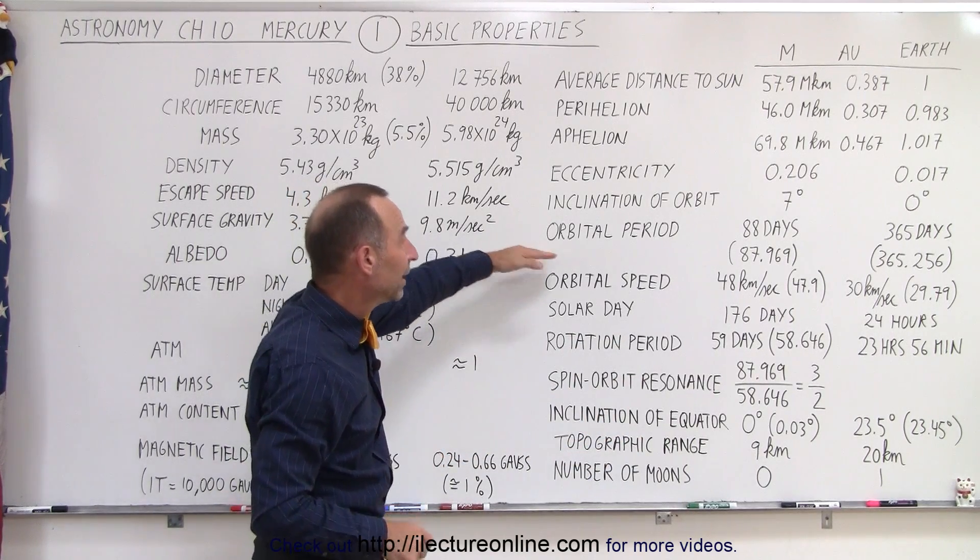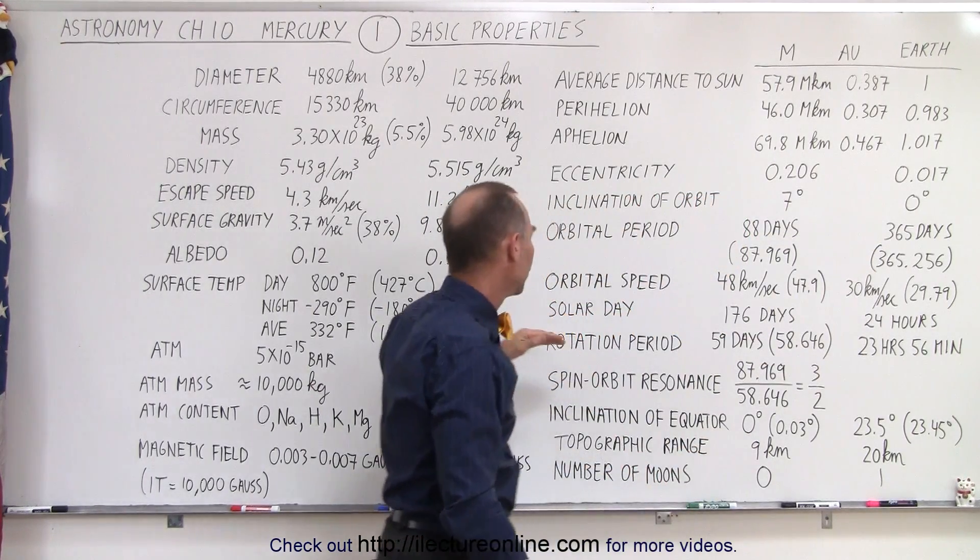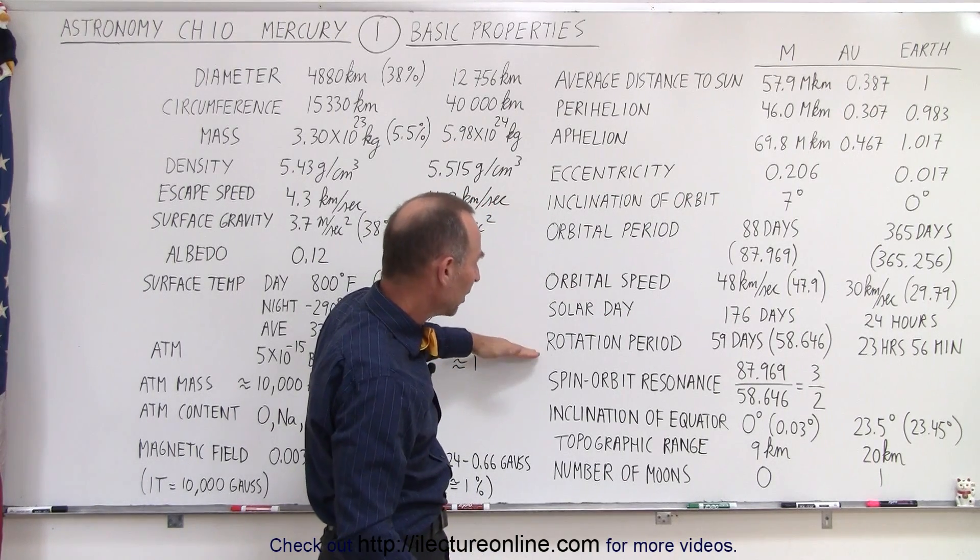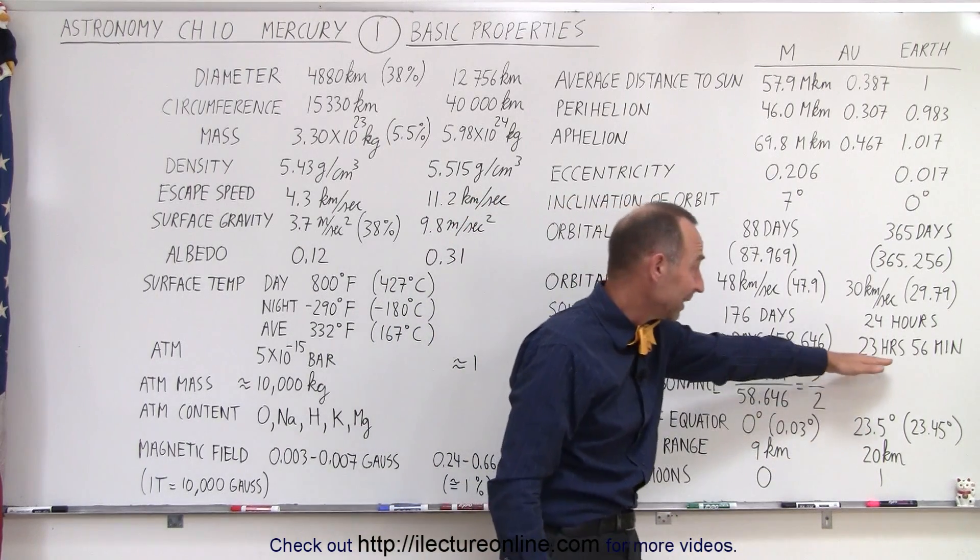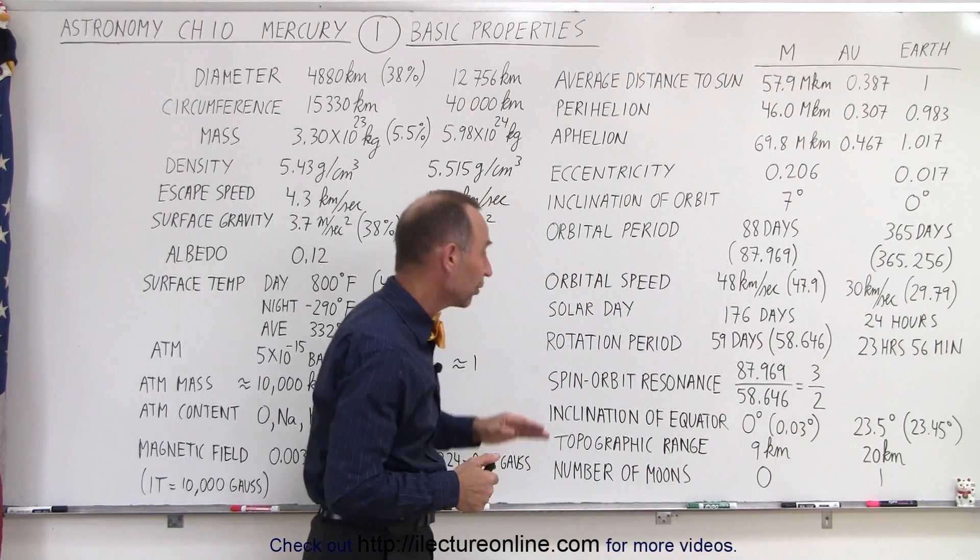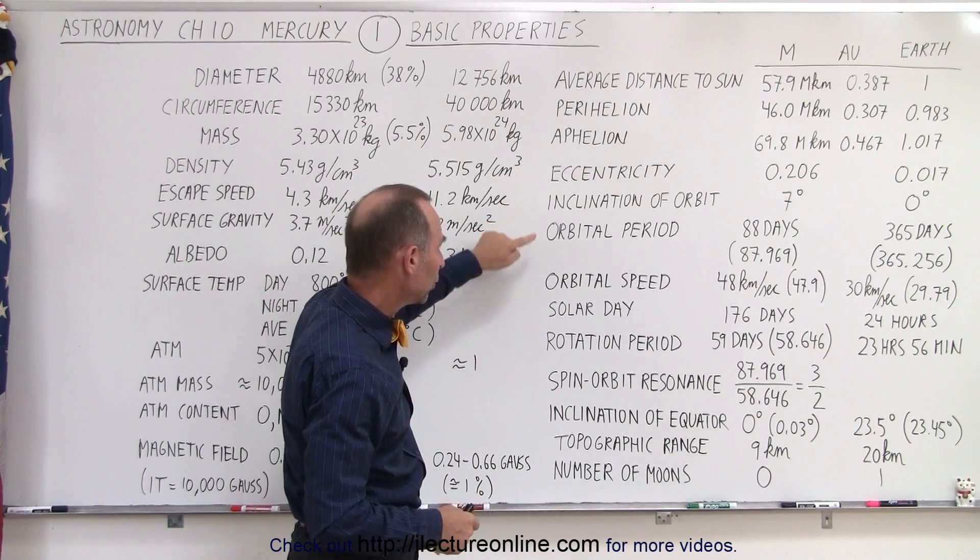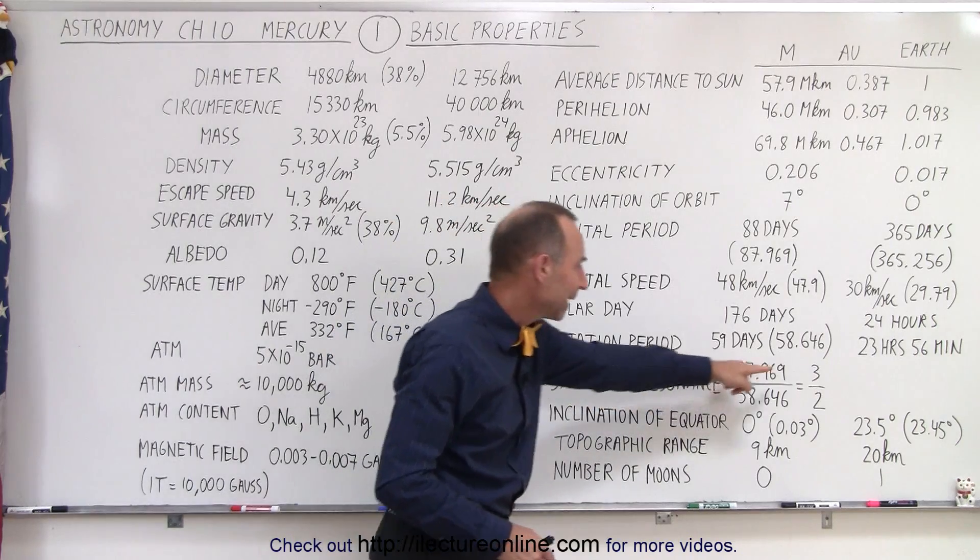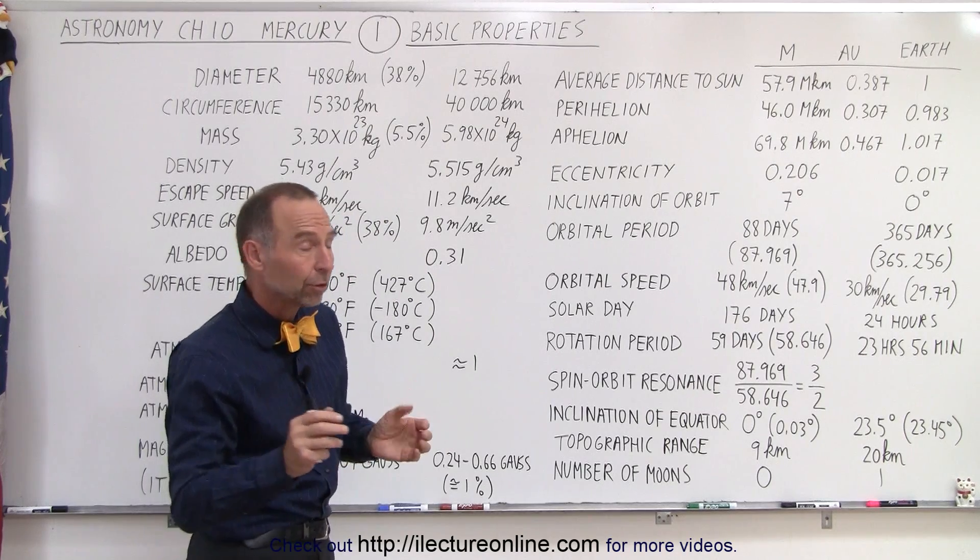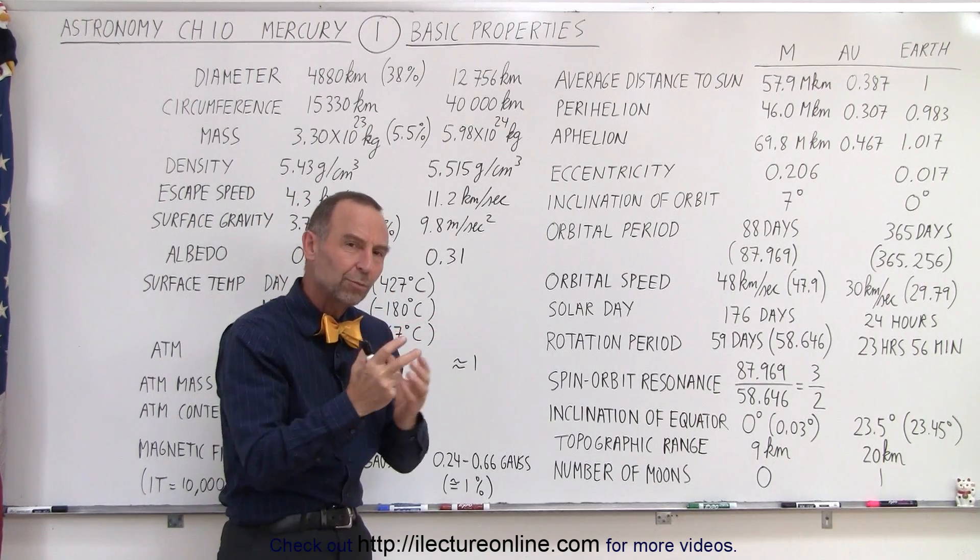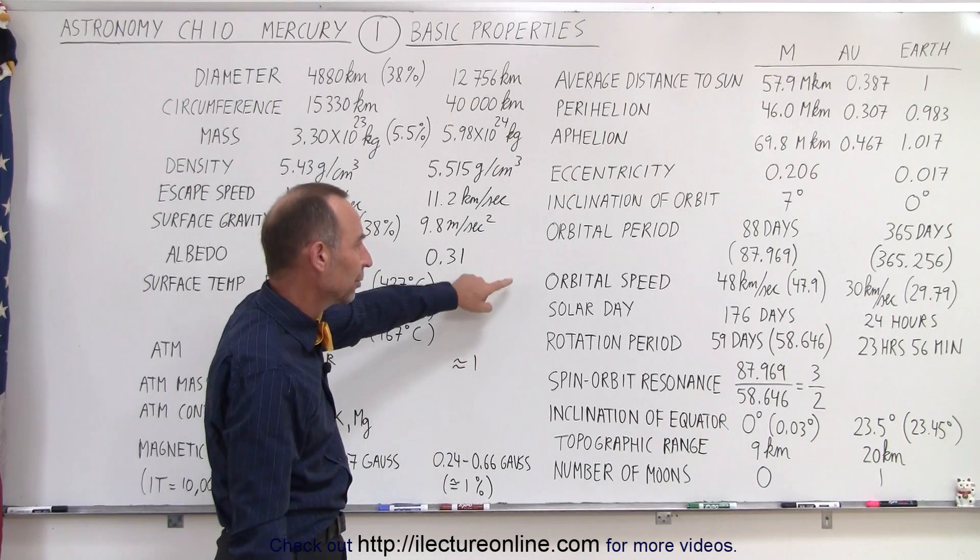The orbital period is about 88 days for Mercury versus 365 days for the Earth. The rotation period is 59 days versus about one day for the Earth. It's actually slightly less than 24 hours for one rotation of the Earth, but notice it's 59 days for Mercury. If you take the ratio between the orbital period and the rotation period, you get exactly 3 to 2. So there's a 3 to 2 spin-orbit resonance for the planet Mercury, because the gravitational traction between the Sun and Mercury is so strong that it basically tightly locked it into that 3 to 2 ratio. We'll talk more about that later as well.